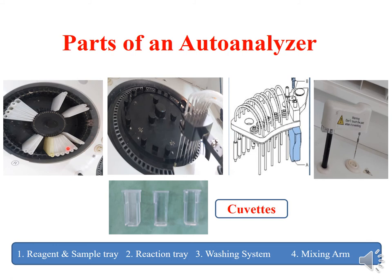The inner part has slots for keeping the reagents — this is known as the reagent tray. So in the same wheel both reagents and samples are kept.